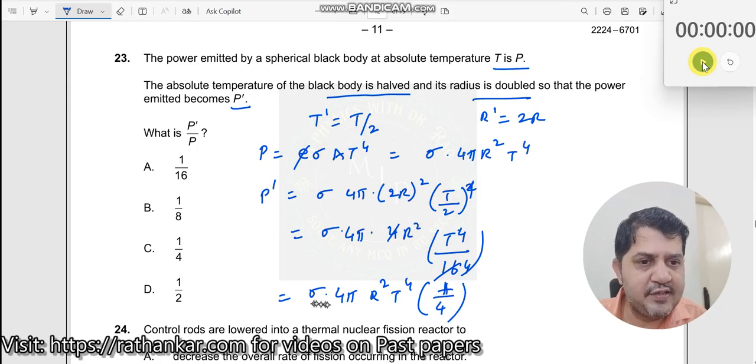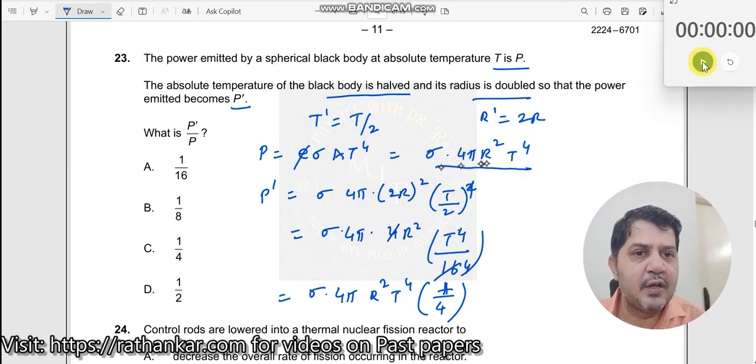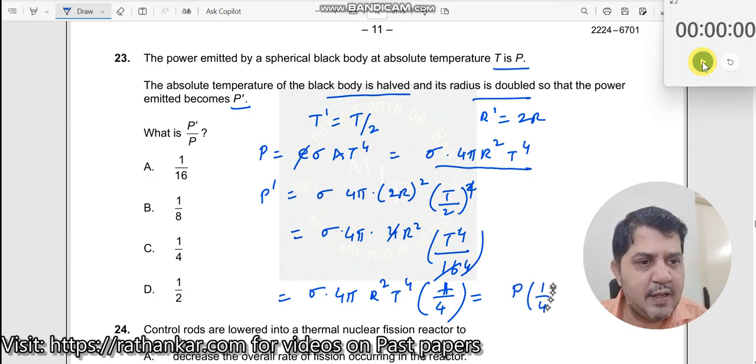Now note, what is sigma 4 pi R squared T to the power 4? That's nothing but P. So I'll substitute this as P times 1 by 4.